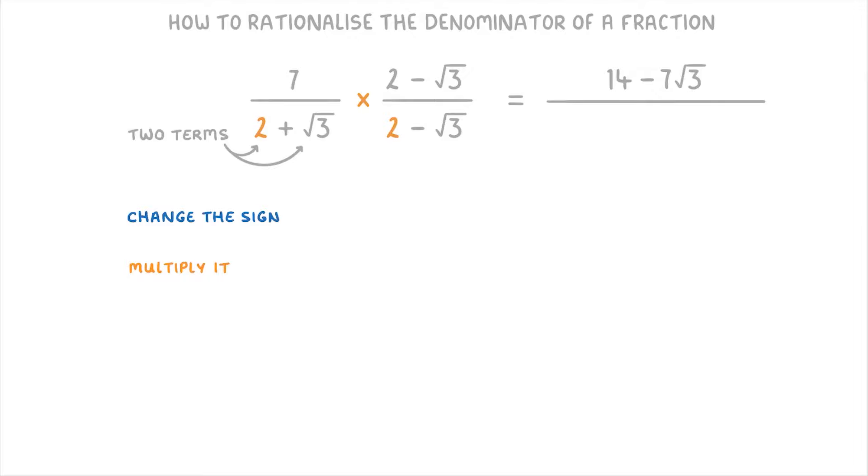Then for the bottom, 2 times 2 is 4, 2 times minus root 3 is minus 2 root 3, root 3 times 2 is plus 2 root 3, and root 3 times minus root 3 is minus 3.